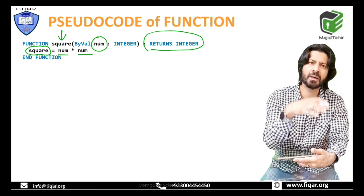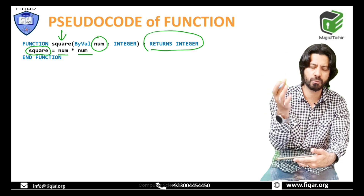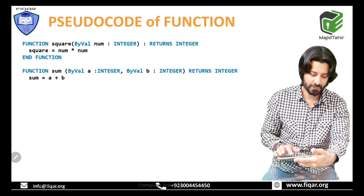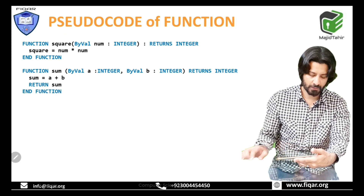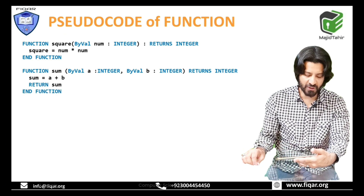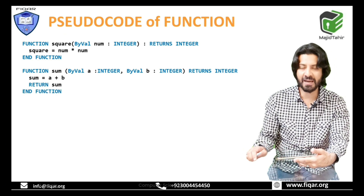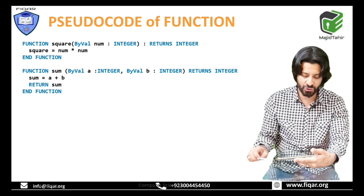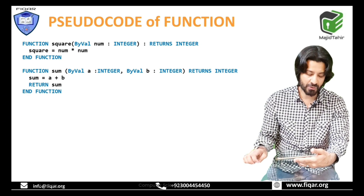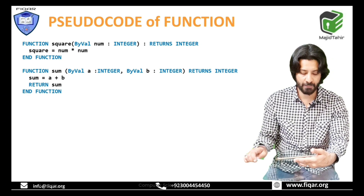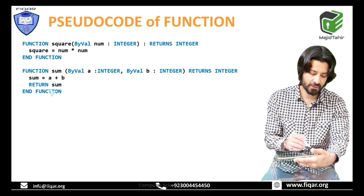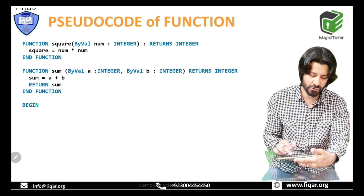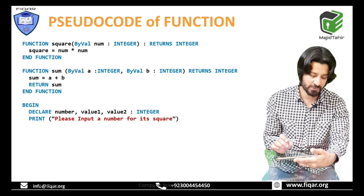This means that 'square' stores the value that will be returned to the program. When we talk about a function returning a value, it means the function itself stores that value. Moving forward, here is another function: 'function sum by val a as integer, by val b as integer, returns integer'. Inside, sum is equal to a plus b, and 'return sum' sends that value back to the main program.